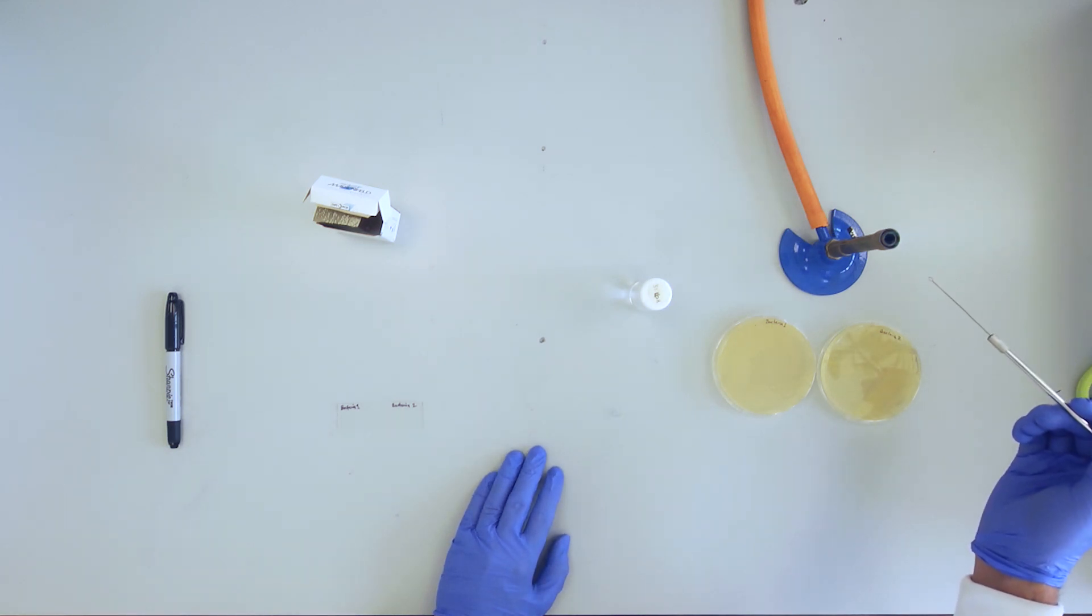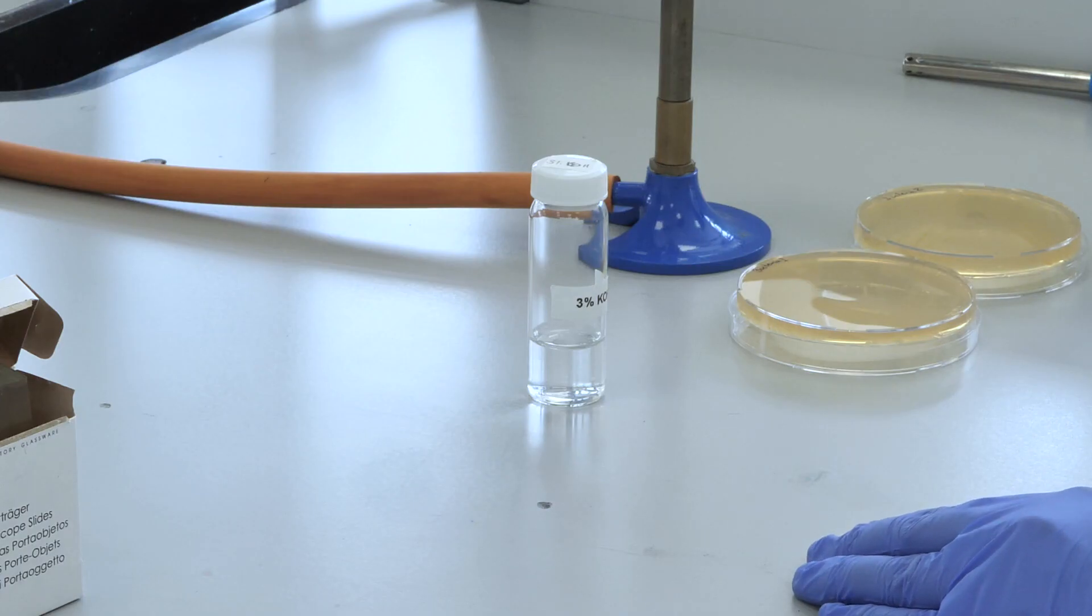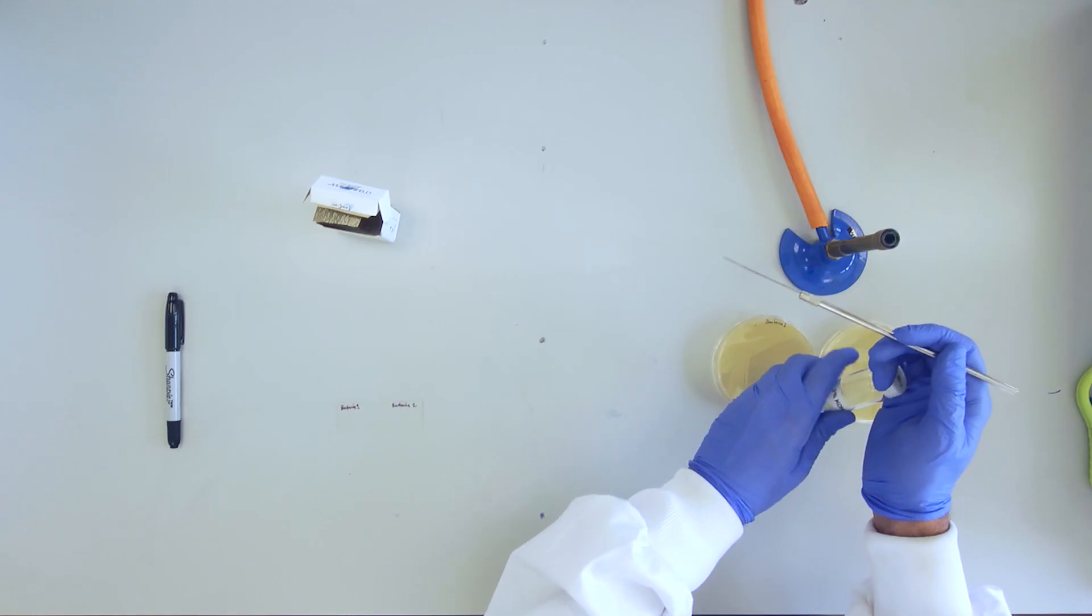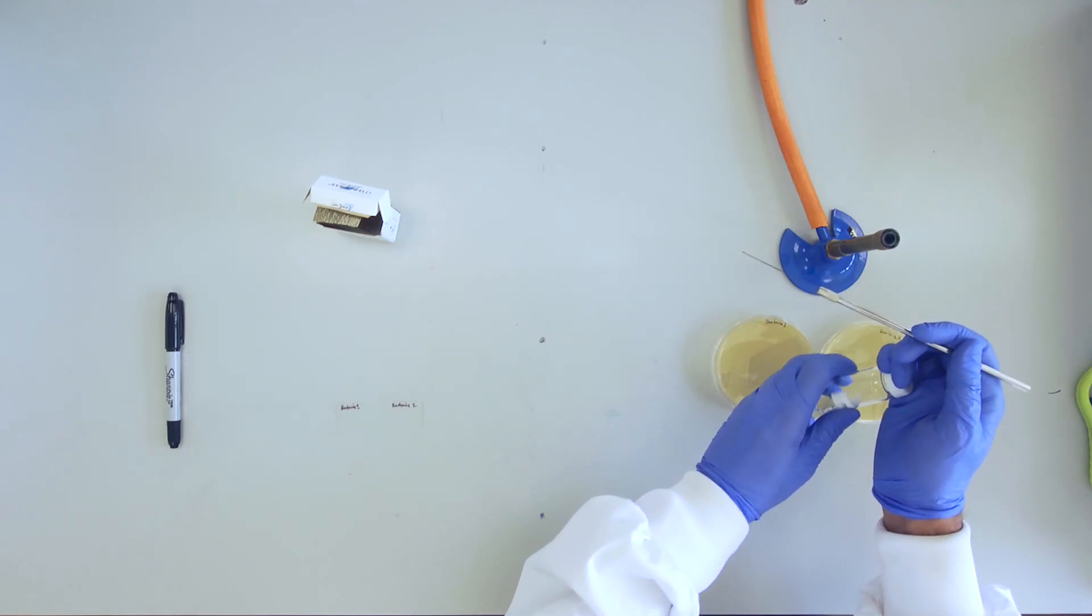Using aseptic technique, place a drop of 3% KOH below each label using your sterile loop.